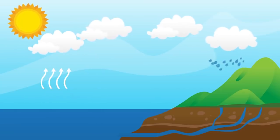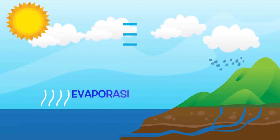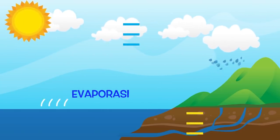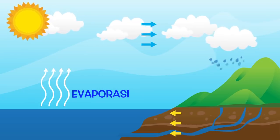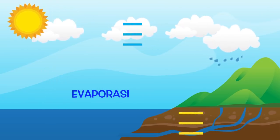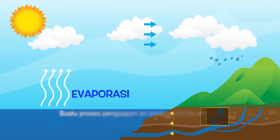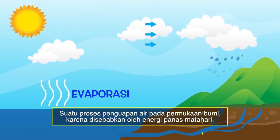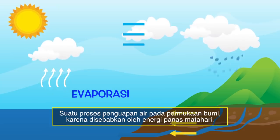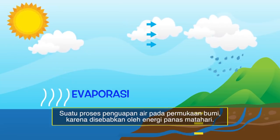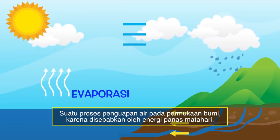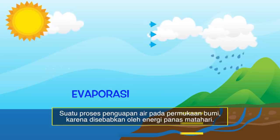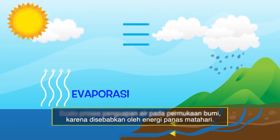Yang pertama, evaporasi. Apa sih evaporasi itu? Evaporasi merupakan suatu proses penguapan air pada permukaan bumi, yang disebabkan oleh energi panas matahari.